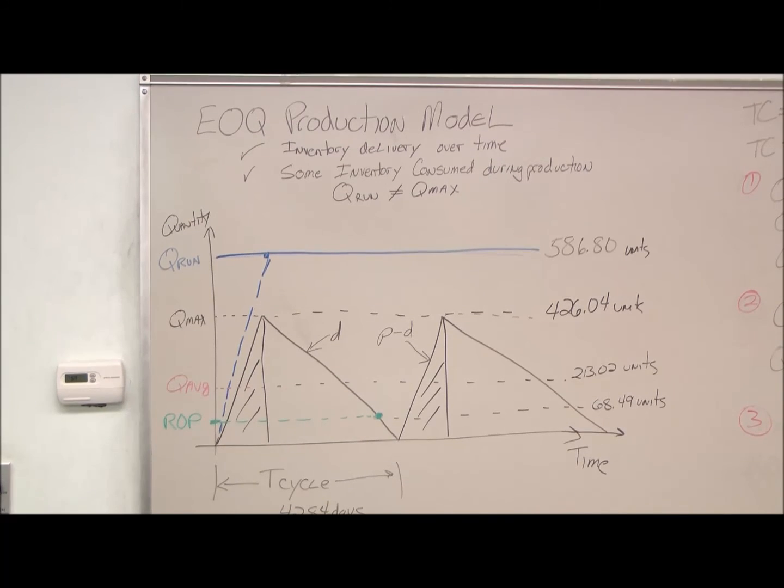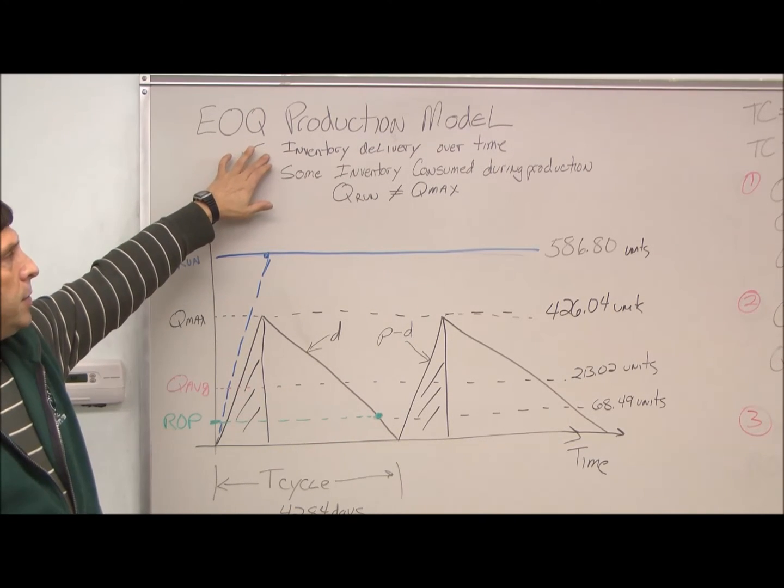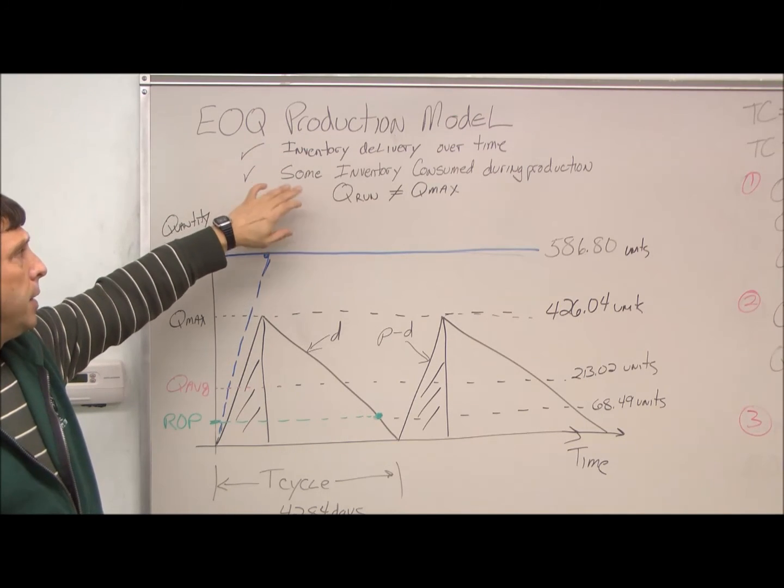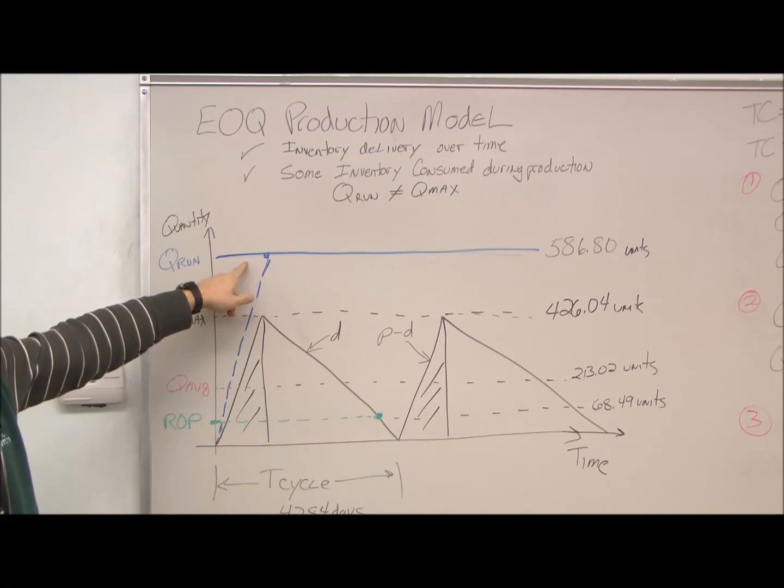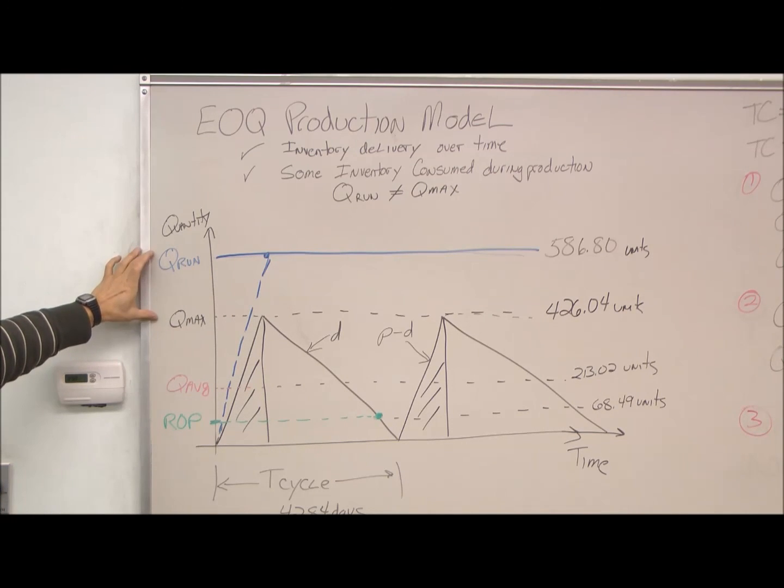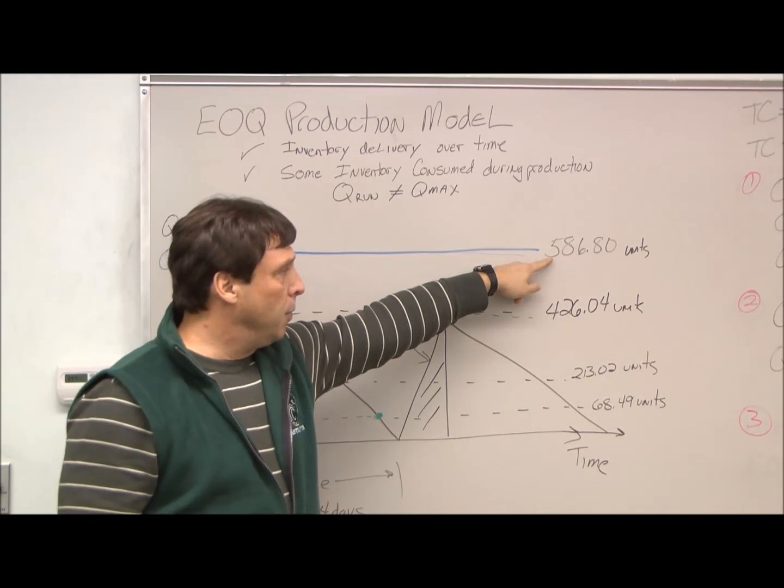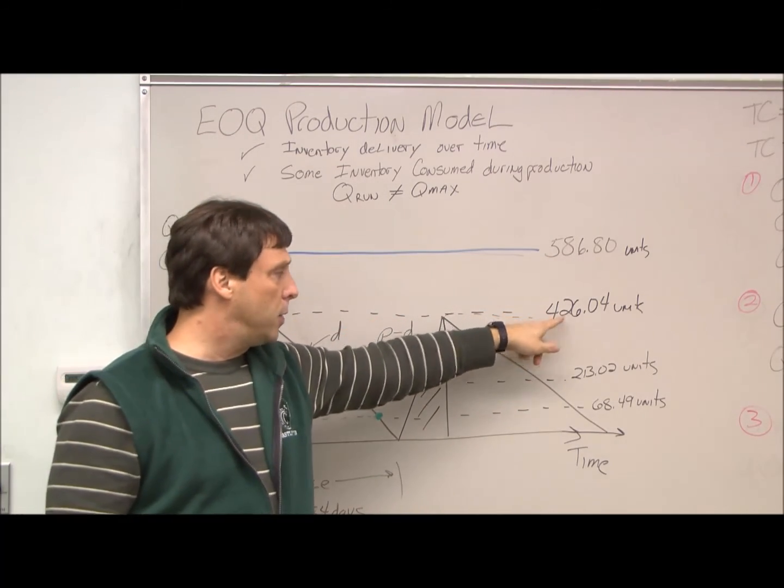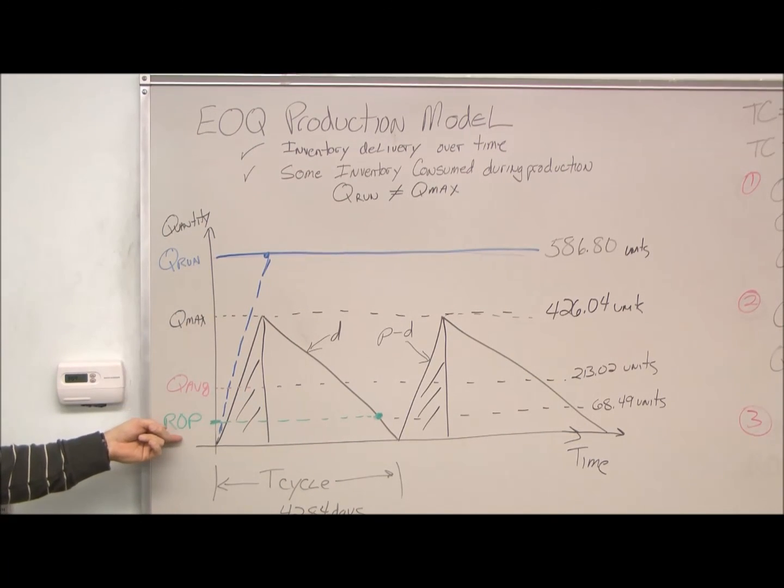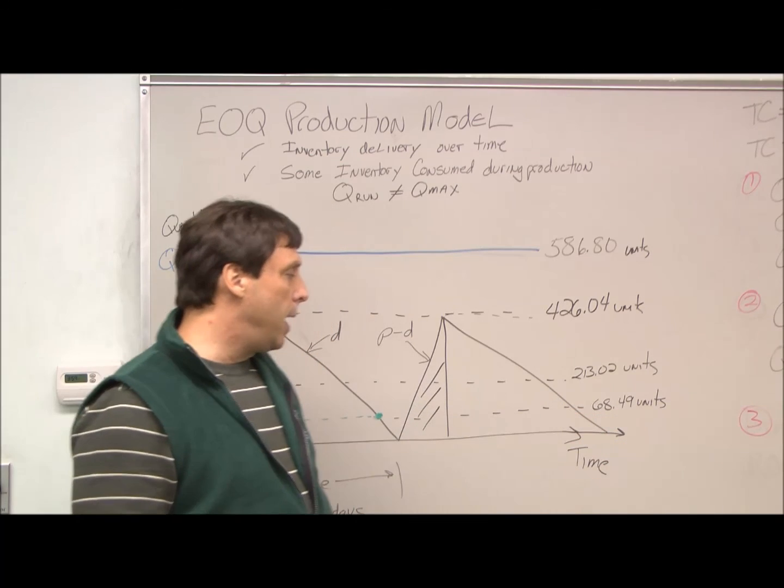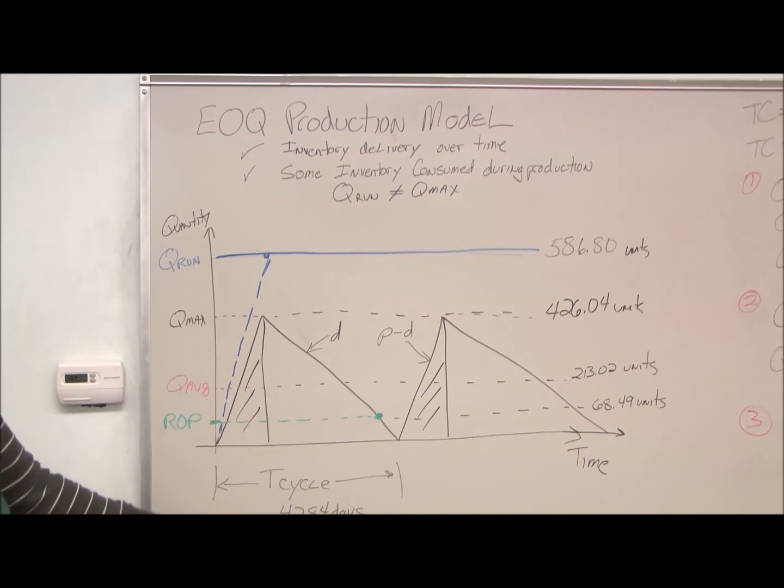This is just a really quick visual on what we did in solving the EOQ model. Remember, inventory delivery is over time. It's not instantaneous like we did in the straight EOQ. Some inventory is consumed during production, so that's what this is showing. If it wasn't consumed, we'd have Q-run. So the difference between Q-max and Q-run is how much was used up during the production process. We've calculated Q-run, 586. We've calculated Q-max, 426. We took the average, and we got Q-average, which is our 213 units. We also calculated the reorder point, which is 68.49 units. The time part of the graph here represents our T-cycle, which we calculated at 42.84 days.